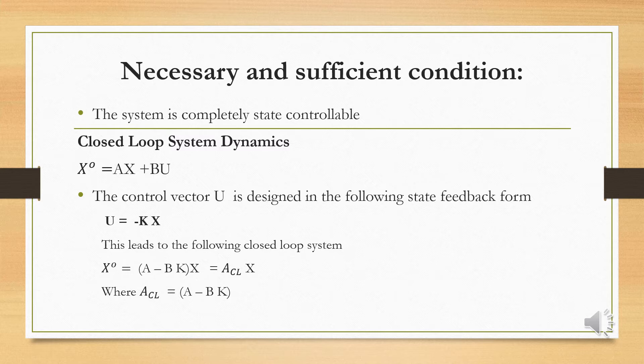When the system is completely controllable, the control is given as a function of state variable x. The control law is u equals minus K into x — that is state variable feedback. So the state equation x-dot becomes x-dot equals A minus BK into x.